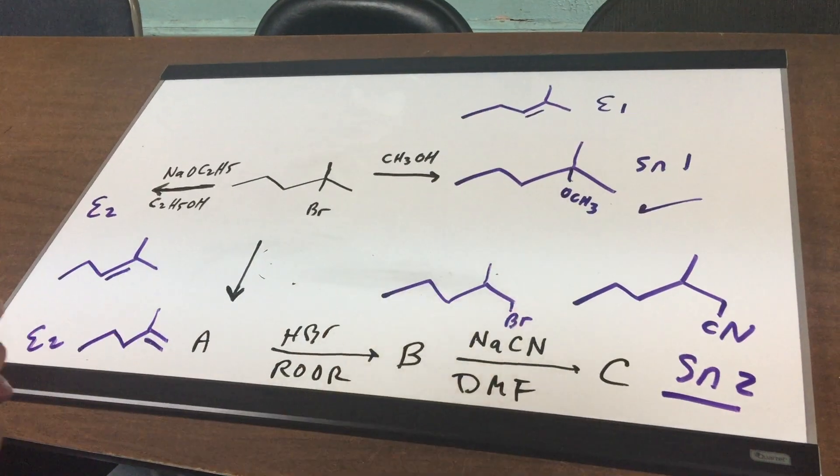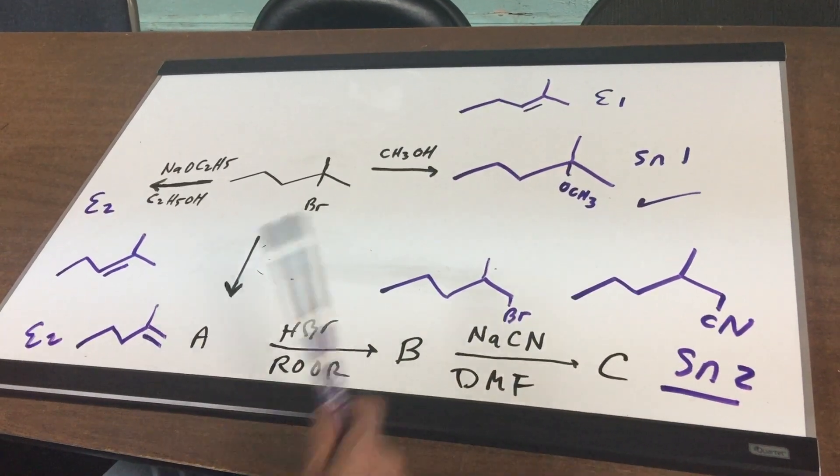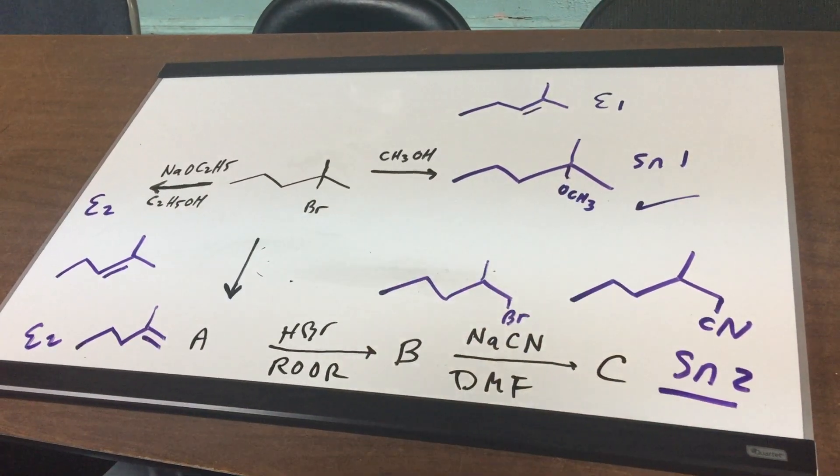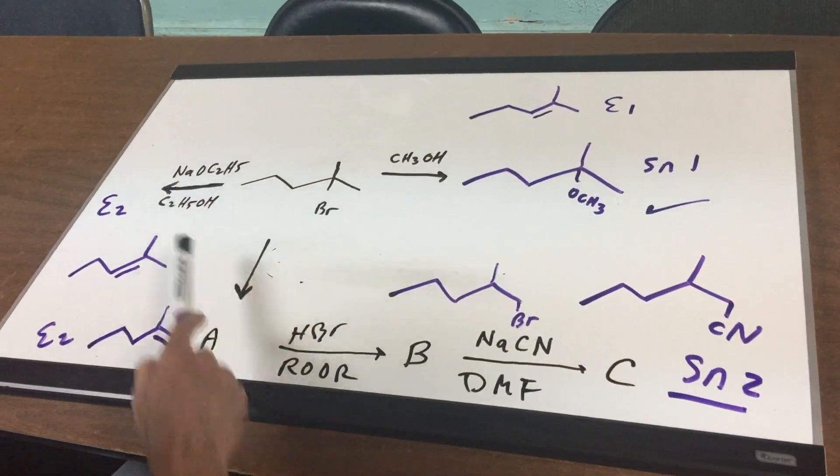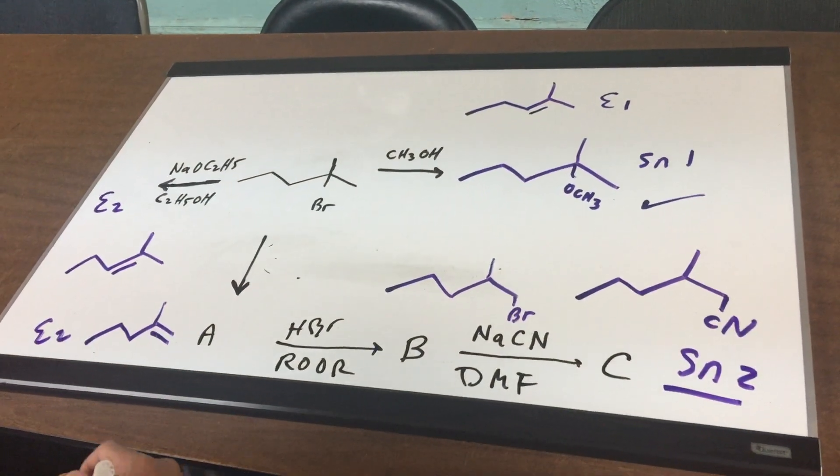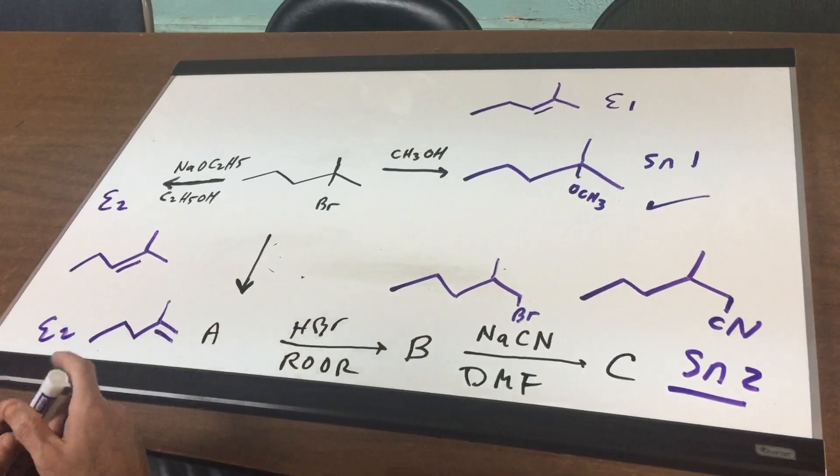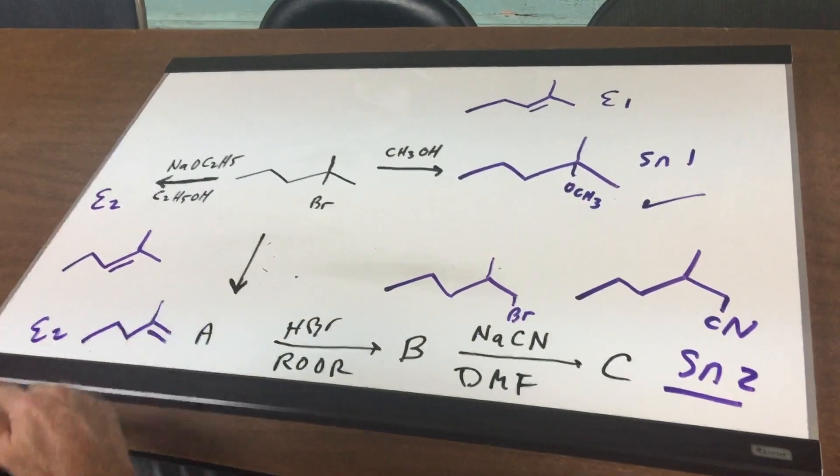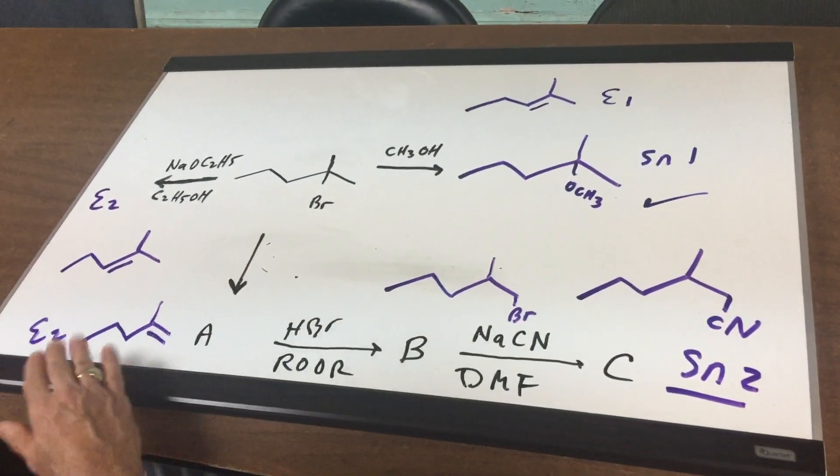So as you can see, we got a whole spectrum of mechanisms. We got the SN1 and the E1, when you treated it with methanol. When you treated it with strong bases, we could have went Zaitsev, or if you used a bulky base, like T-butoxide, you went Hoffman.